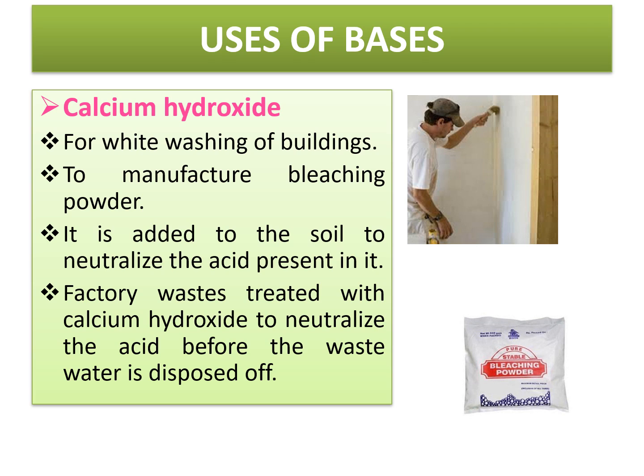So these are the main 4 uses of calcium hydroxide: whitewashing of buildings, manufacture of bleaching powder, added to soil to neutralize acid content, and treating factory waste with calcium hydroxide to neutralize acid content before disposing into water bodies.